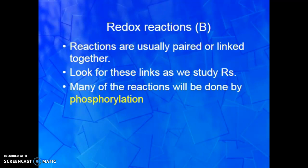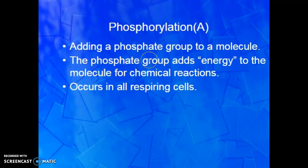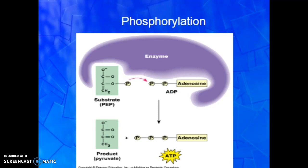Many of these reactions are going to be done by phosphorylation — sticking a phosphate group onto something. When we add that phosphate group, we essentially energize that molecule for chemical reactions. We turn that molecule on and then it goes and does something else. This occurs in all respiring cells in both plants and animals. We've got an enzyme with a substrate — PEP — and we're going to add a phosphate from the PEP to the ADP to energize it into ATP. Think ADP to ATP.